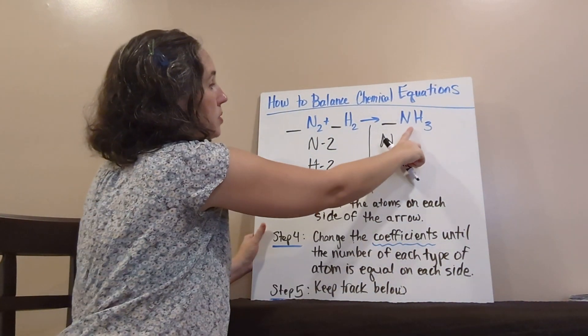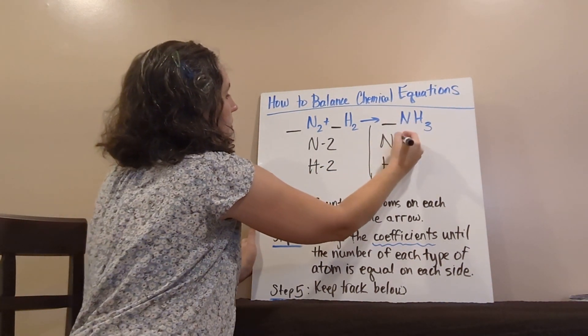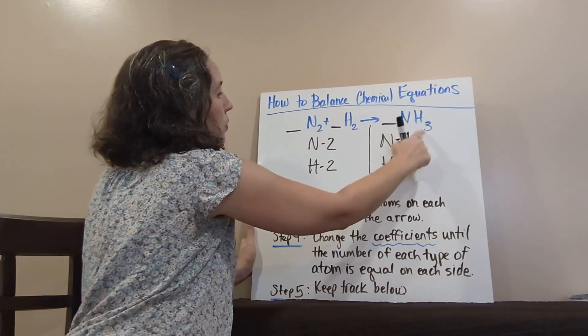Nitrogen, the subscript, it's blank, but that means it's actually one. So, one times one is one. And three times one is three.